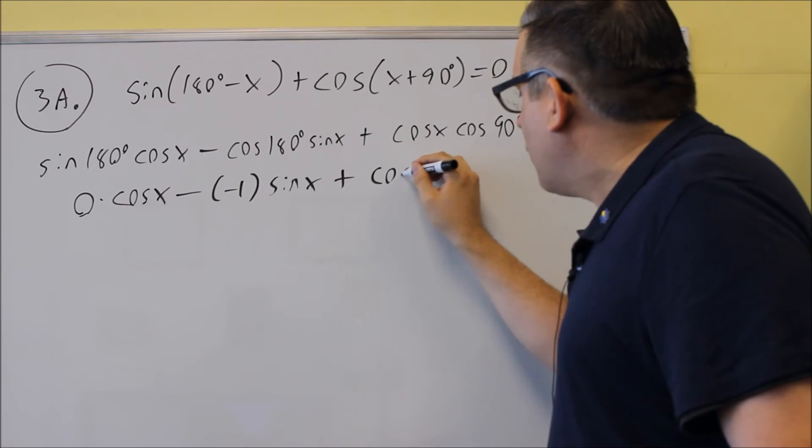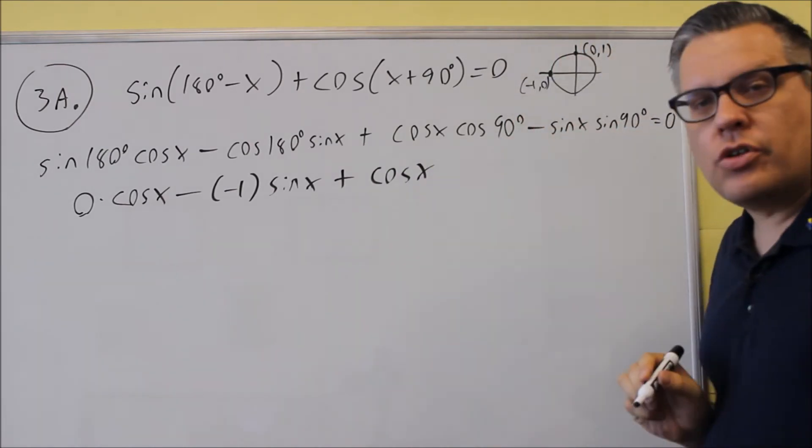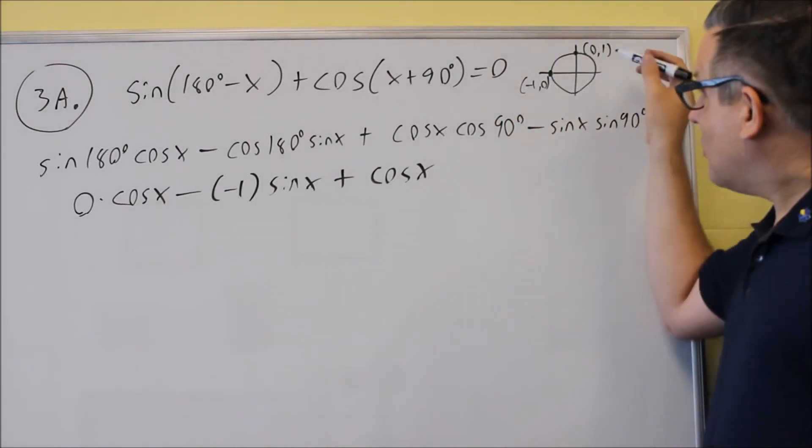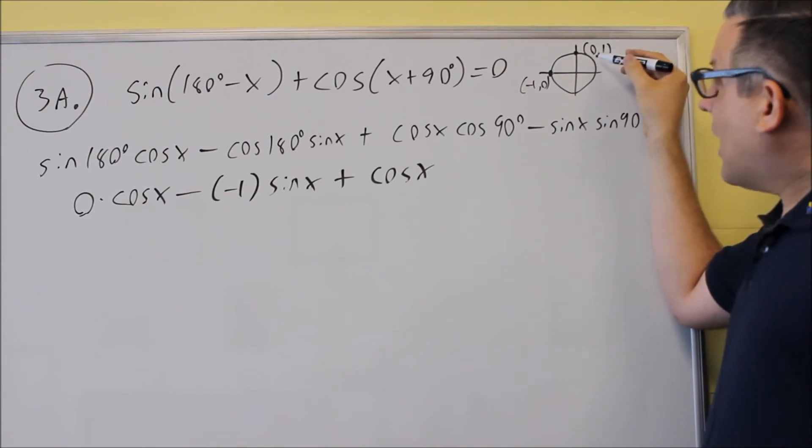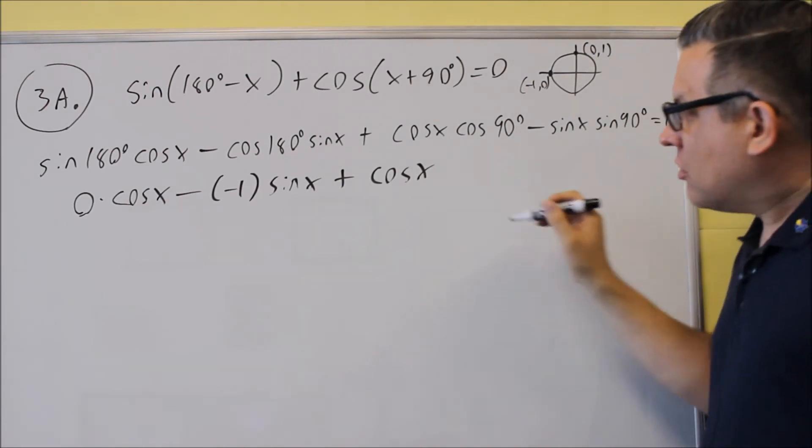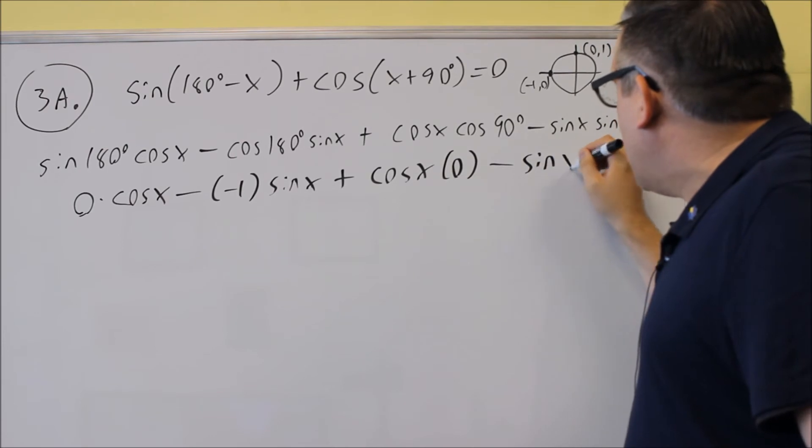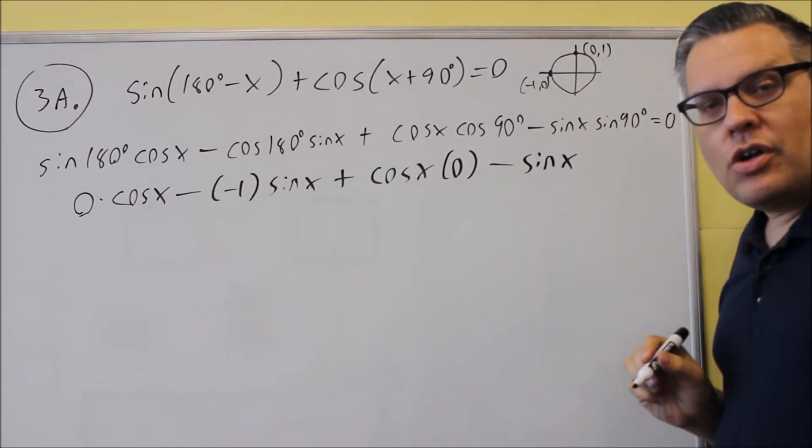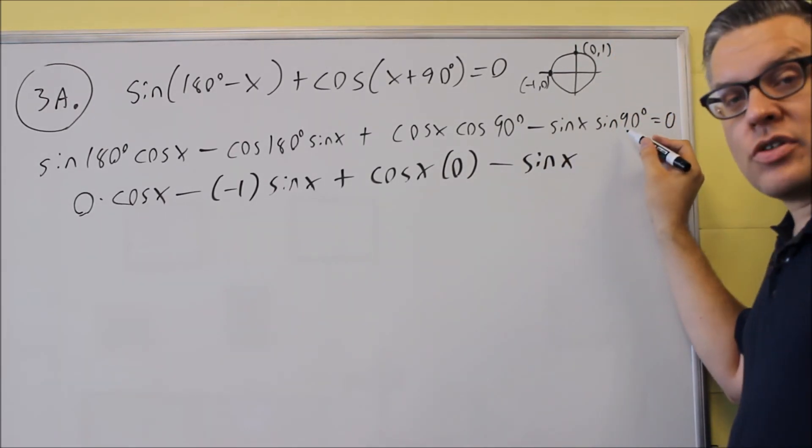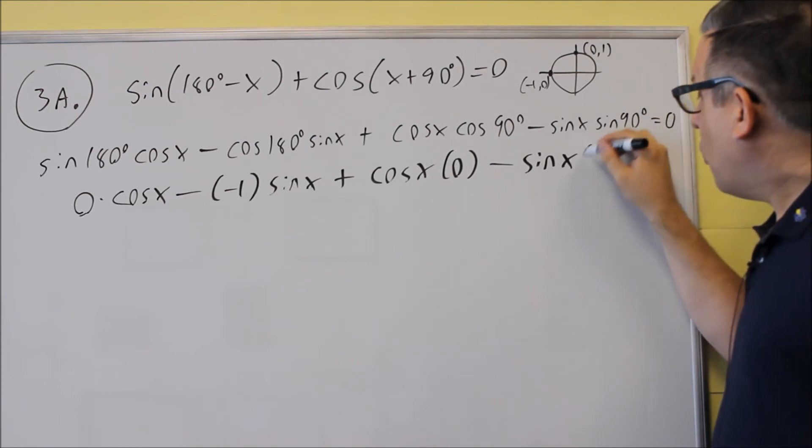Next one I have cosine x, I'll leave that alone and then we want to do cosine 90. That is the x value at 90 degrees, that's zero. So put zero in for that one and then we have minus sine x and then we have the y value at 90 which is what sine 90 is asking for. That would be one.